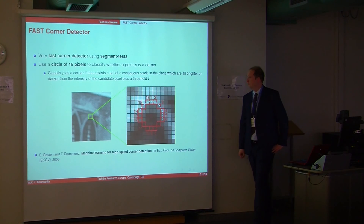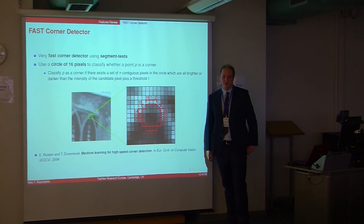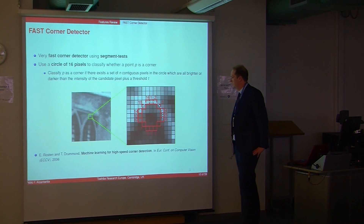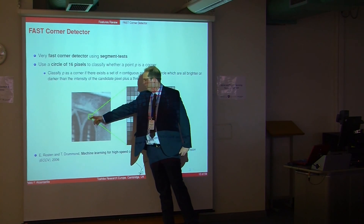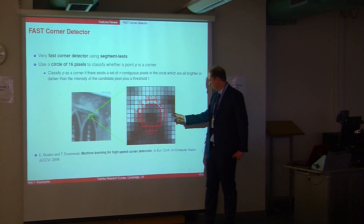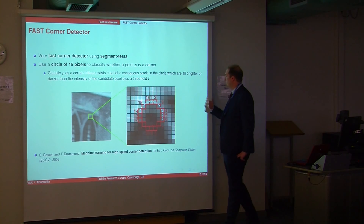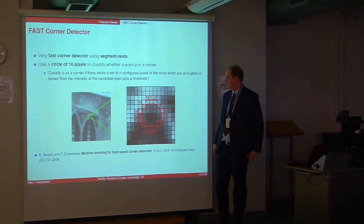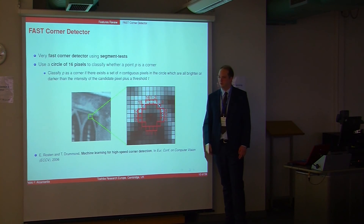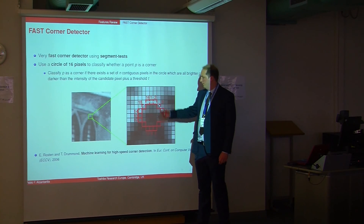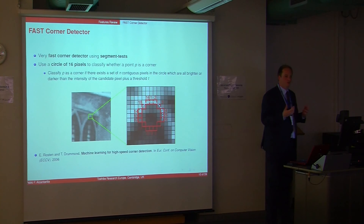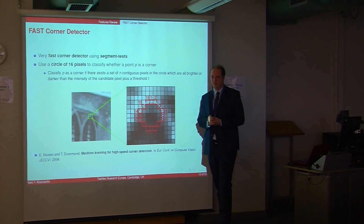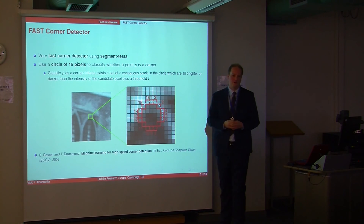A more novel method is the FAST corner detector. As its name suggests, it detects corners very fast using segment tests. For a given pixel, we check in its circular neighborhood if there are 10 continuous pixels that are all brighter or darker than the candidate intensity plus a threshold T. If so, FAST declares it a corner. Using this segment test, corners can be detected in hundreds of milliseconds.